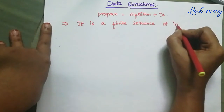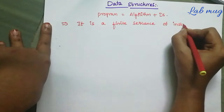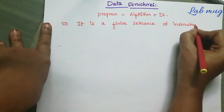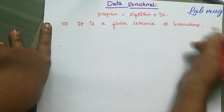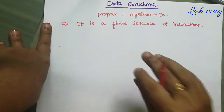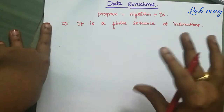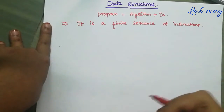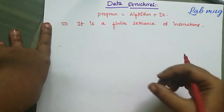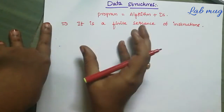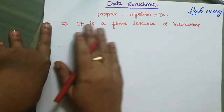So each and every instruction ni anandu loo step-by-step process manu explain chayetam jaruthunni. Each of which has a clear meaning. So anandu loo manam prathidani neat ga, logical ga explain chasthu manam algorithm ni design chaskoontha.